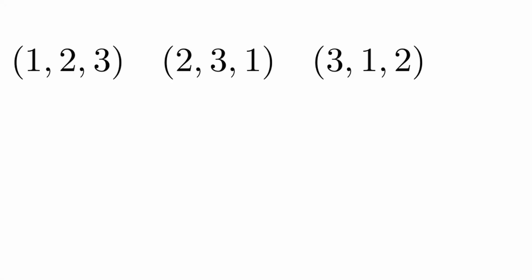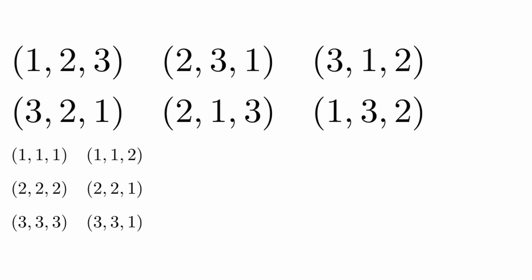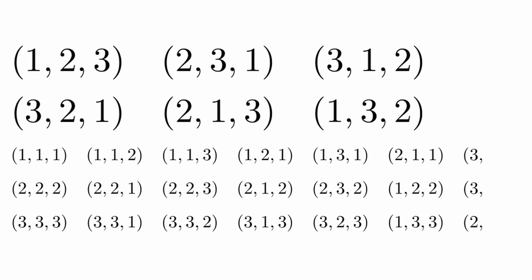If you count the number of possible combinations of i, j, and k, there are three cubed, or 27. Three of them result in the value of one, three of them result in the value of negative one, and the remainder — twenty-one of them — result in the value of zero.